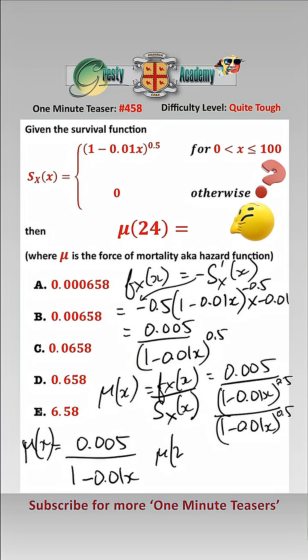so therefore mu of 24 is simply 0.005 over 1 minus 0.01 times 24, which equals 0.00658 answer b.